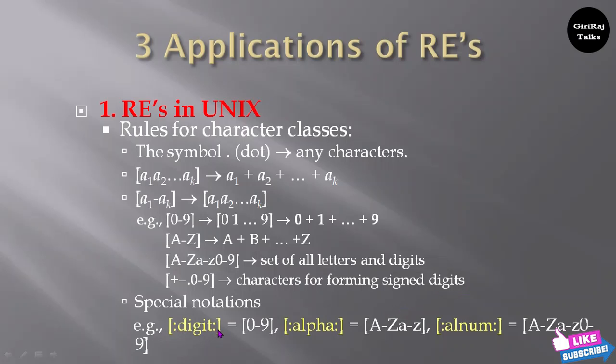The example is [:digit:] which represents [0-9], [:alpha:] which represents [A-Z][a-z], and [:alnum:] which represents [A-Z][a-z][0-9]. Instead of these numerical numbers or alphabets, you can write like this also. This is the way you need to follow to show the special notations.